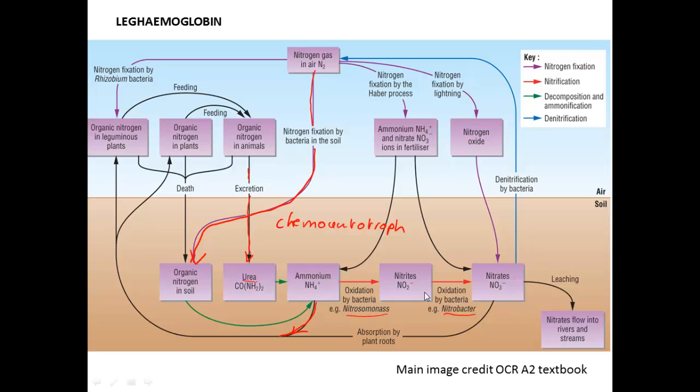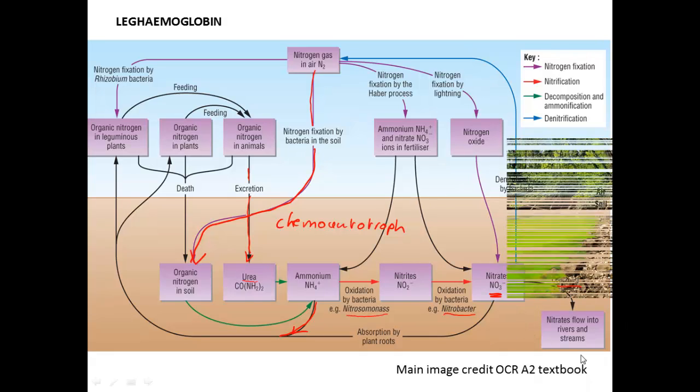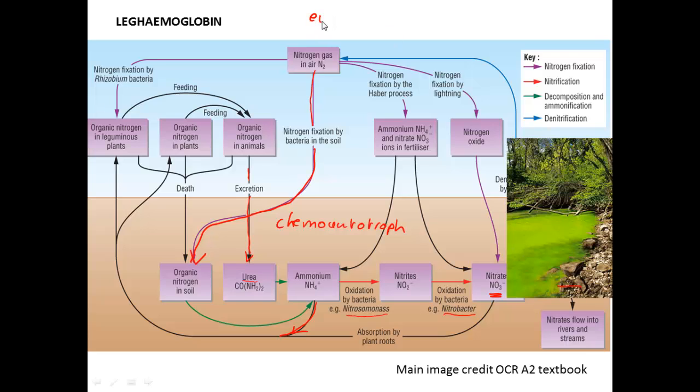You've got to remember that nitrifying bacteria are not doing this for the benefit of the nitrogen cycle. They couldn't care less. They are doing it for themselves to gain energy. They are chemoautotrophs. And by happy results, those nitrates produced can then be absorbed by plants and plant roots. So we're at the nitrate stage. One thing that can happen is leaching. If it rains a lot, you can get a lot of nitrates washing into rivers and streams, and that can lead to eutrophication. That's a classic GCSE topic.